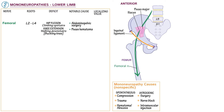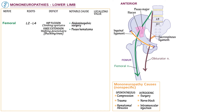Now draw the sacrospinous ligament, which connects the sacrum to the spine of the ischium. Show that the obturator nerve descends medial to the femoral nerve, anterior to the sacrospinous ligament, and exits via the obturator canal down the medial aspect of the thigh to innervate the medial compartment thigh muscles. Indicate that it's supplied by L2 to L4, and that obturator neuropathy causes hip adduction weakness, which manifests with involuntary hip abduction during walking — gait instability from adductor failure.